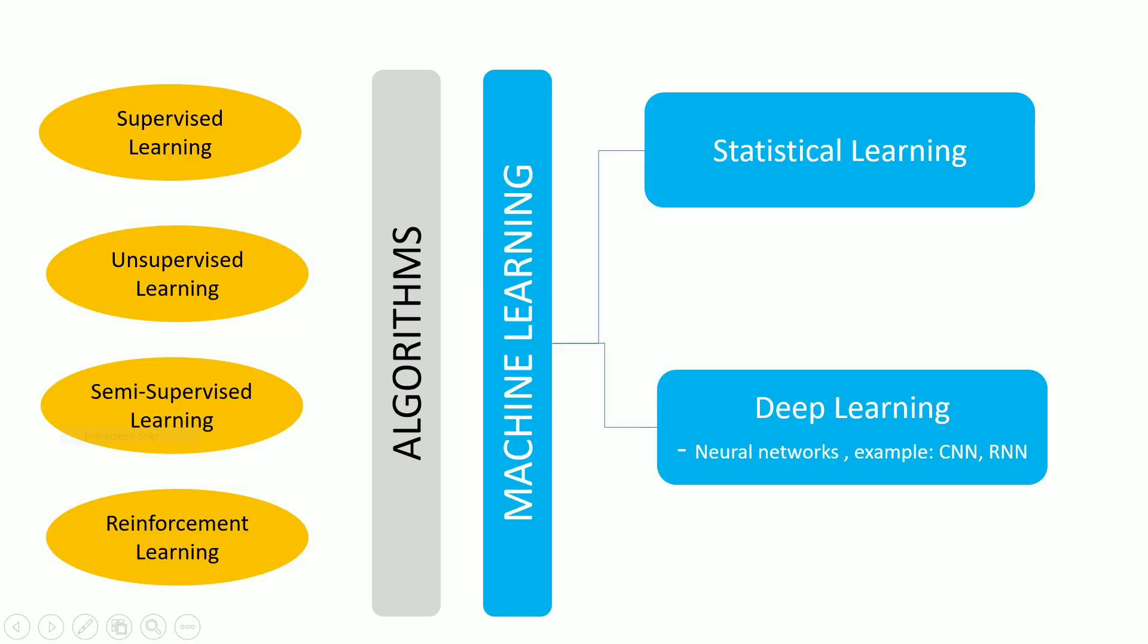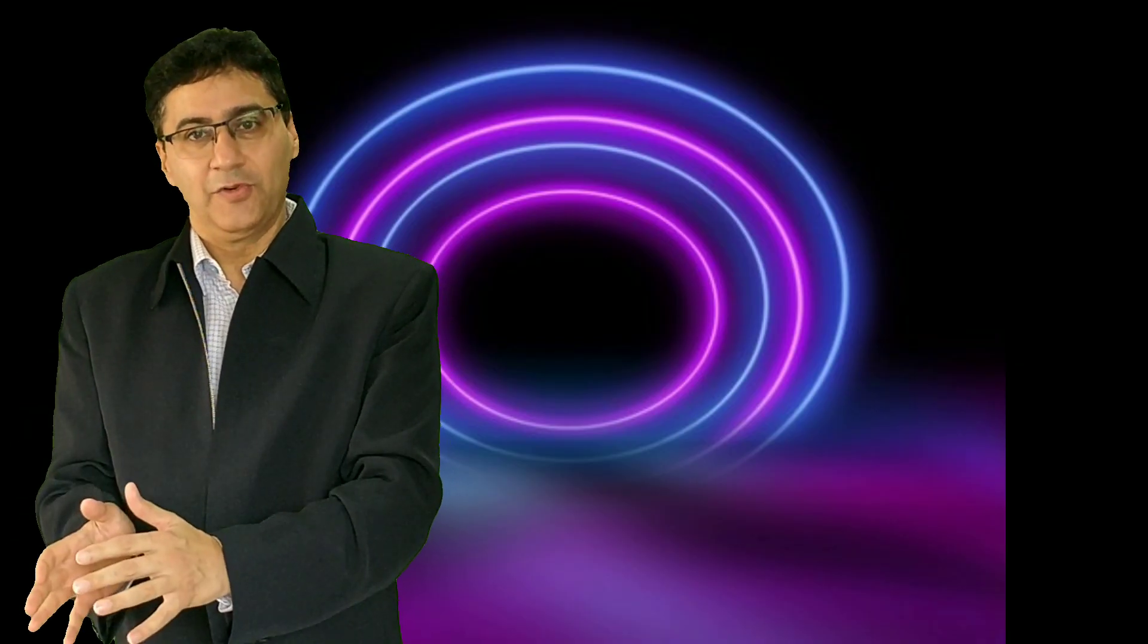So if we were to classify further machine learning, one will be statistical learning wherein statistical models are being used, regression analysis and many other methods would be used to write those algorithms. And another is deep learning which is gaining in much more prominence now. Deep learning we will spend a few minutes on that.